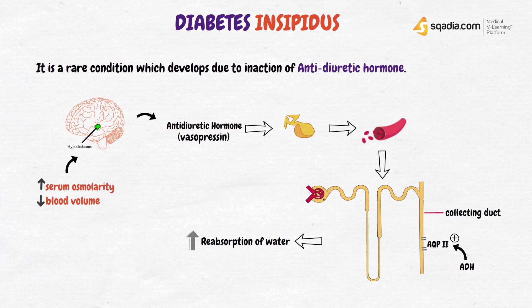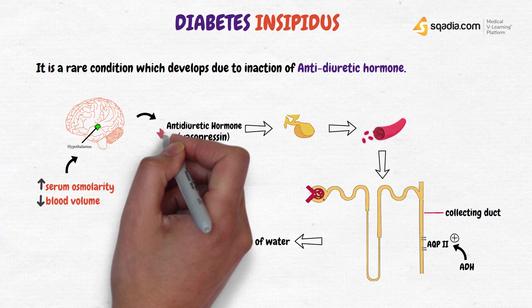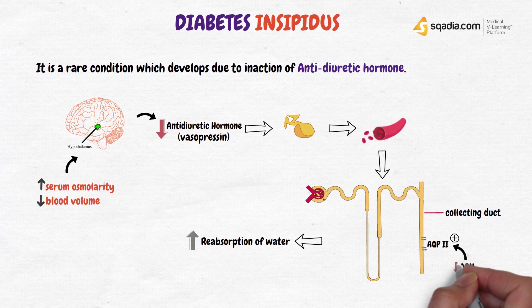In diabetes insipidus, there is decreased action of ADH causing decrease in aquaporin-2 channels in the collecting tubule and decreased water reabsorption.